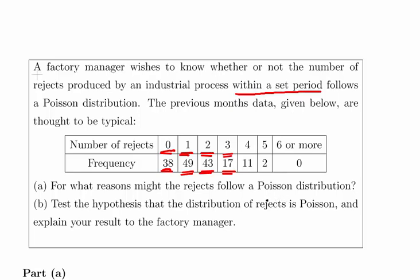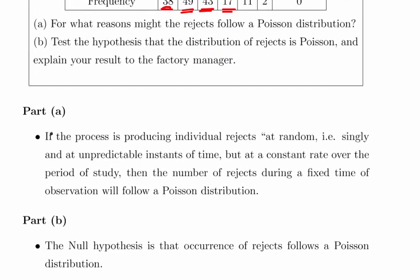So for what reasons might the rejects follow a Poisson distribution? Well, essentially I just covered it. This is Part A. Anything that describes the definition of a Poisson distribution, the theory behind it, and how this is relevant in this situation.